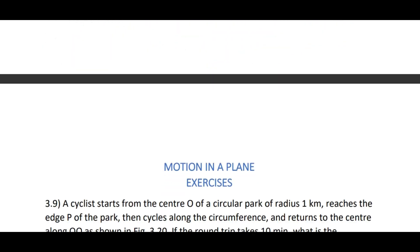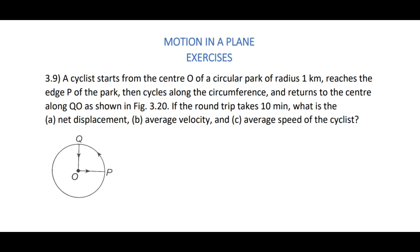Coming to problem 3.9: A cyclist starts from the center O of a circular park of radius 1 kilometer, reaches the edge P of the park, then cycles along the circumference and returns to the center along QO as shown in the figure. If the round trip takes 10 minutes, what is the net displacement, average velocity, and average speed of the cyclist? Here the situation is: initially the cyclist is at point O, which is at the center of the circle, traveling towards P.